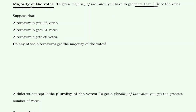If any category receives more than those votes then that would be the majority winner. Let's see that in this example: suppose that we've done some polling and alternative A gets 33 votes, alternative B gets 31 votes, and alternative C gets 36 votes. Do any of these three alternatives A, B, or C get the majority of the votes?